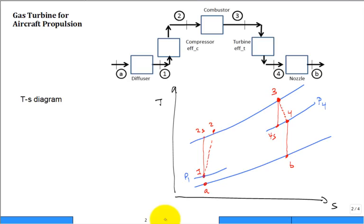In it, we had our major components: the diffuser, we had the compressor, the combustor, the turbine, the nozzle.